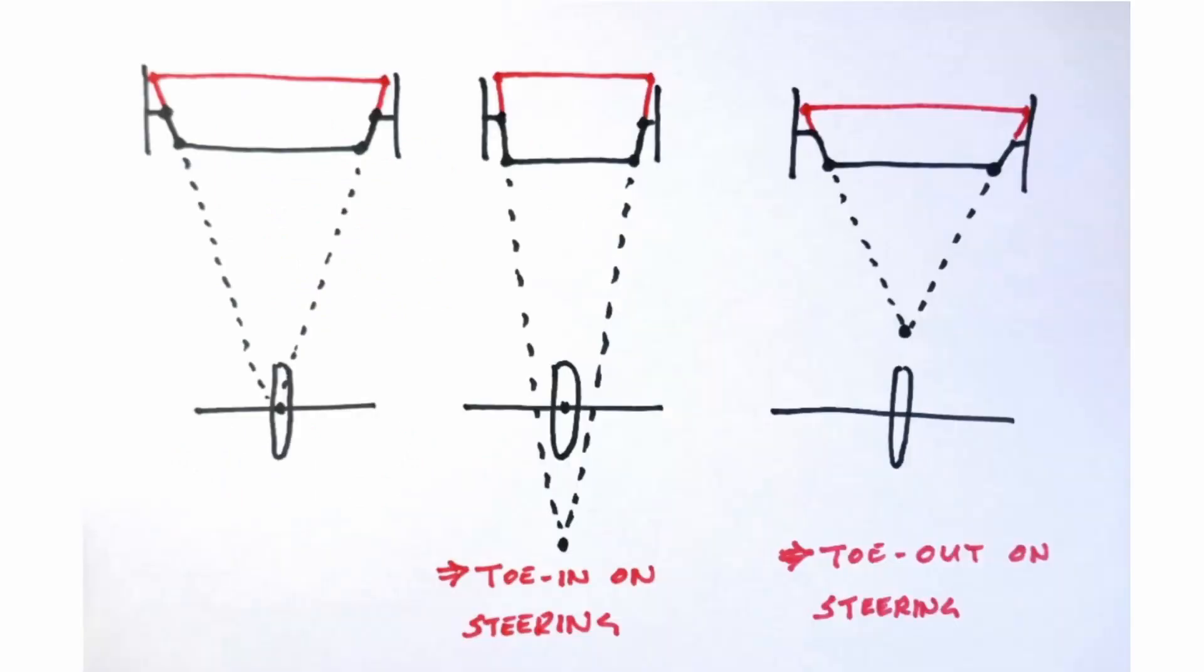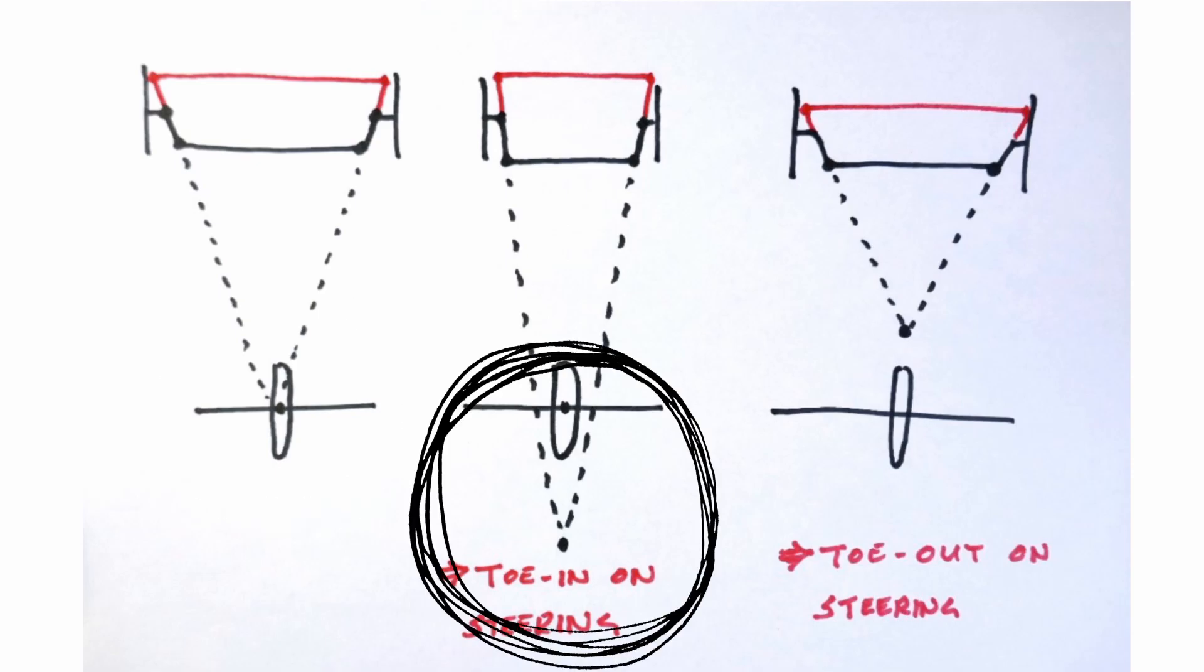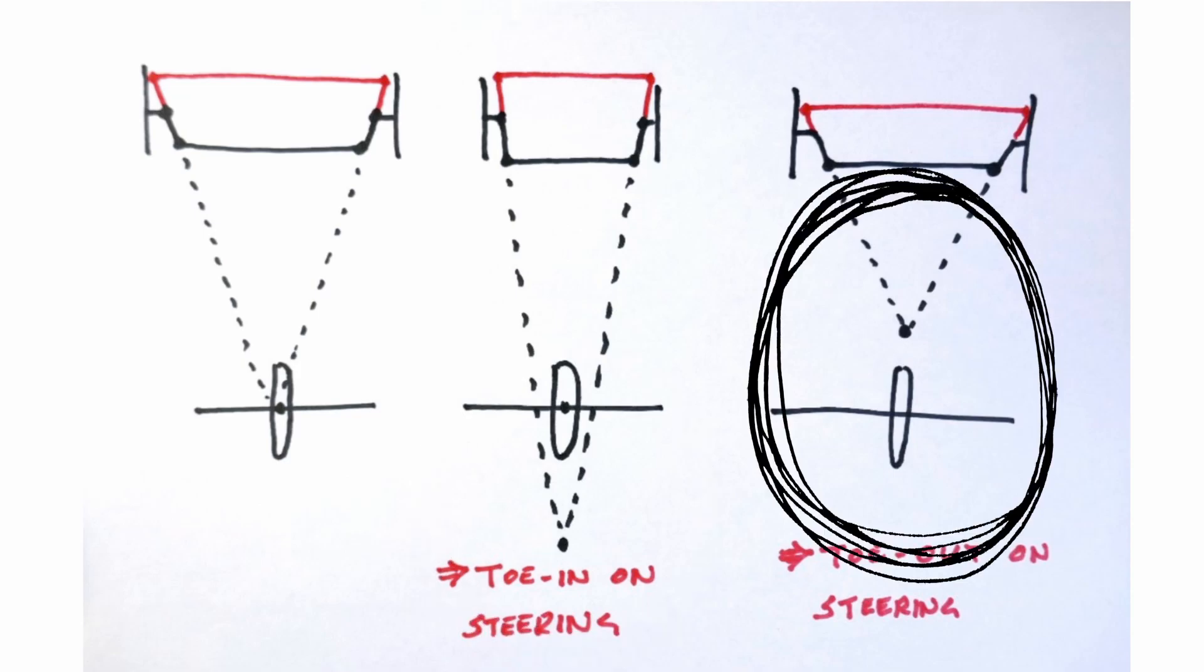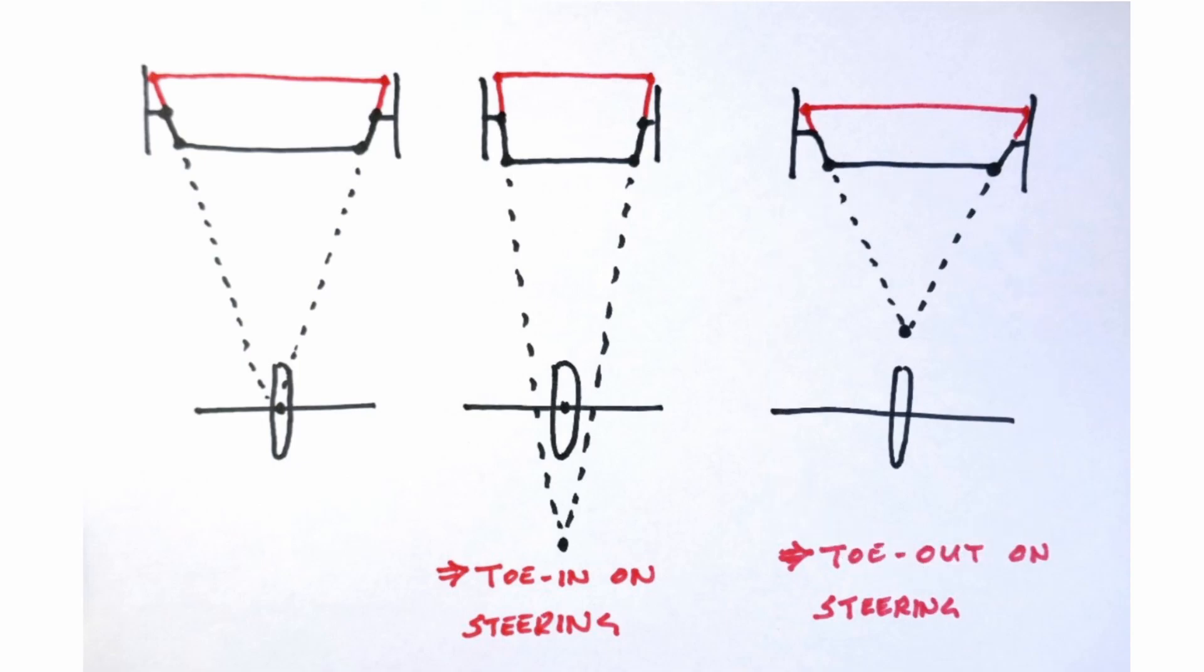Steering arm angle. To achieve the ideal steering action the steering arms should point towards the centre of the rear axle. If they point to a spot behind the rear axle the wheels will toe in on steering and if they point to a spot in front of the rear axle the wheels will toe out. This holds true whether the steering arms are behind or in front of the pivots.